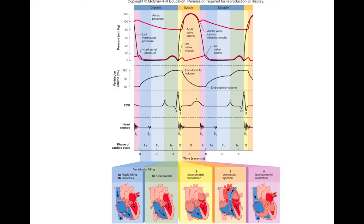Initially you have this rapid filling part, and that's just because the blood that's collected in the atria falls down into the ventricles relatively quickly. After that it continues to fill as blood is returned from the veins to the atria and then from the atria into the ventricles, but it happens a little bit more slowly. And that slower filling is called diastasis.